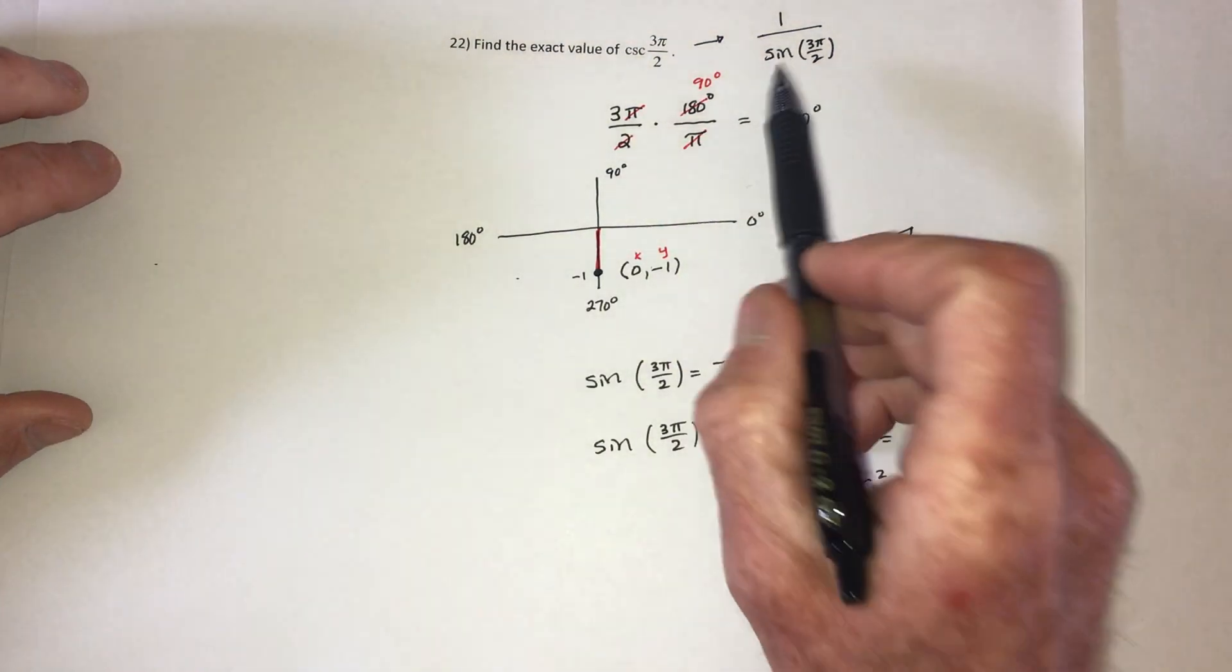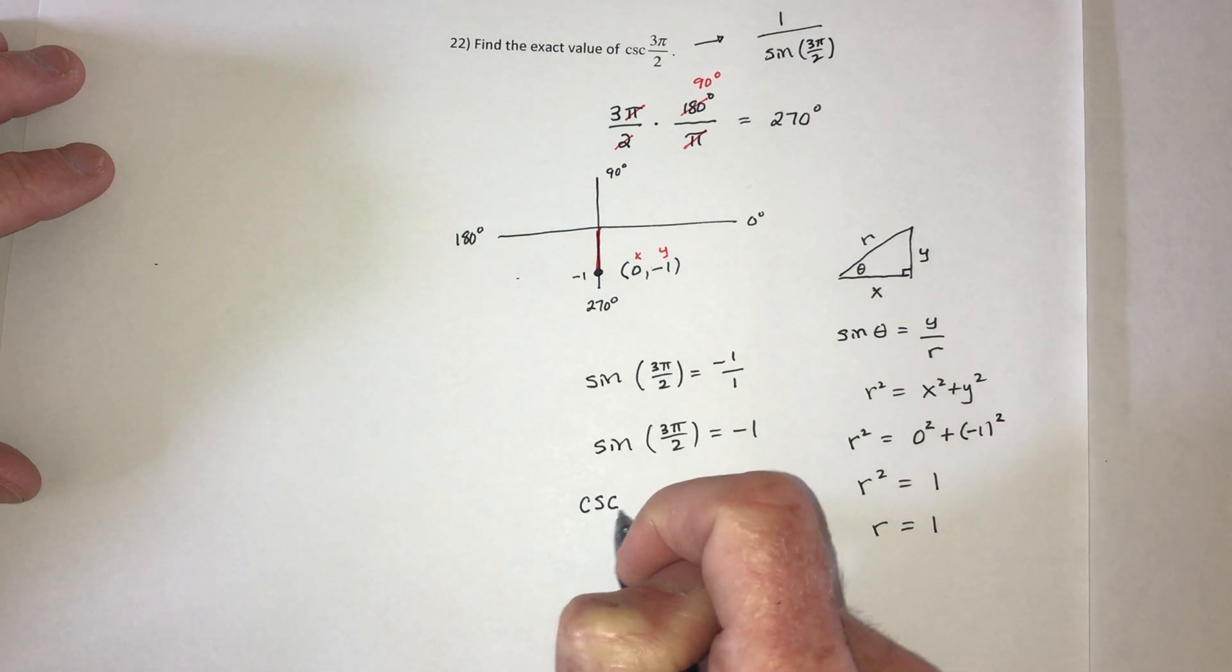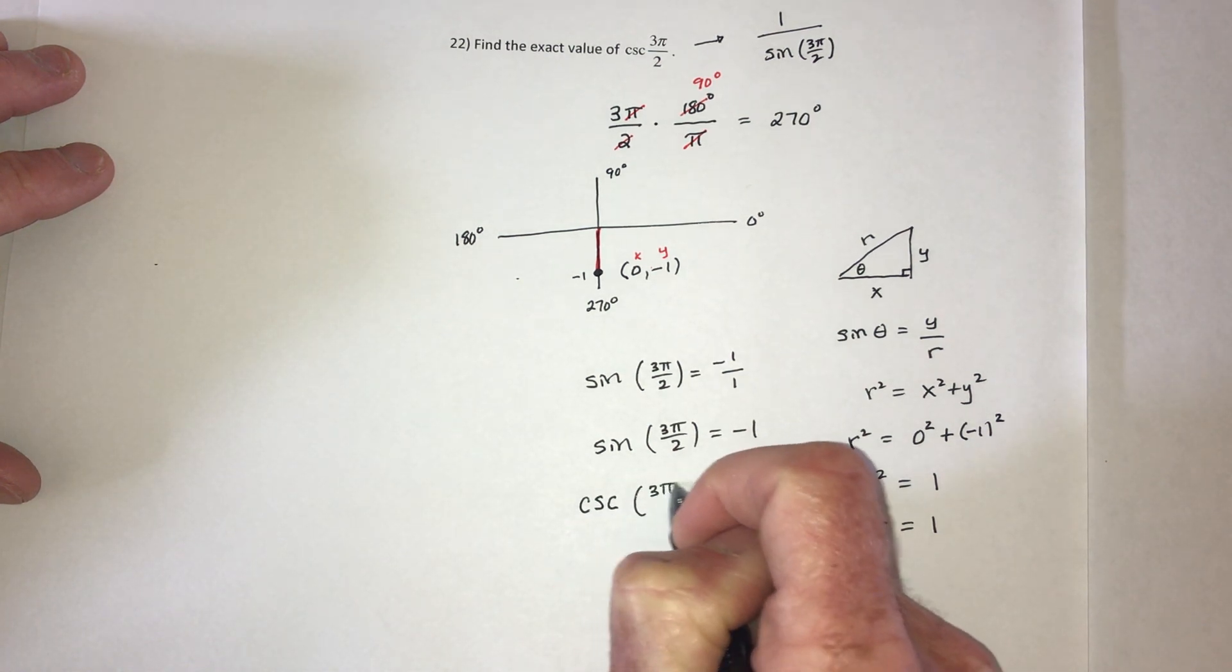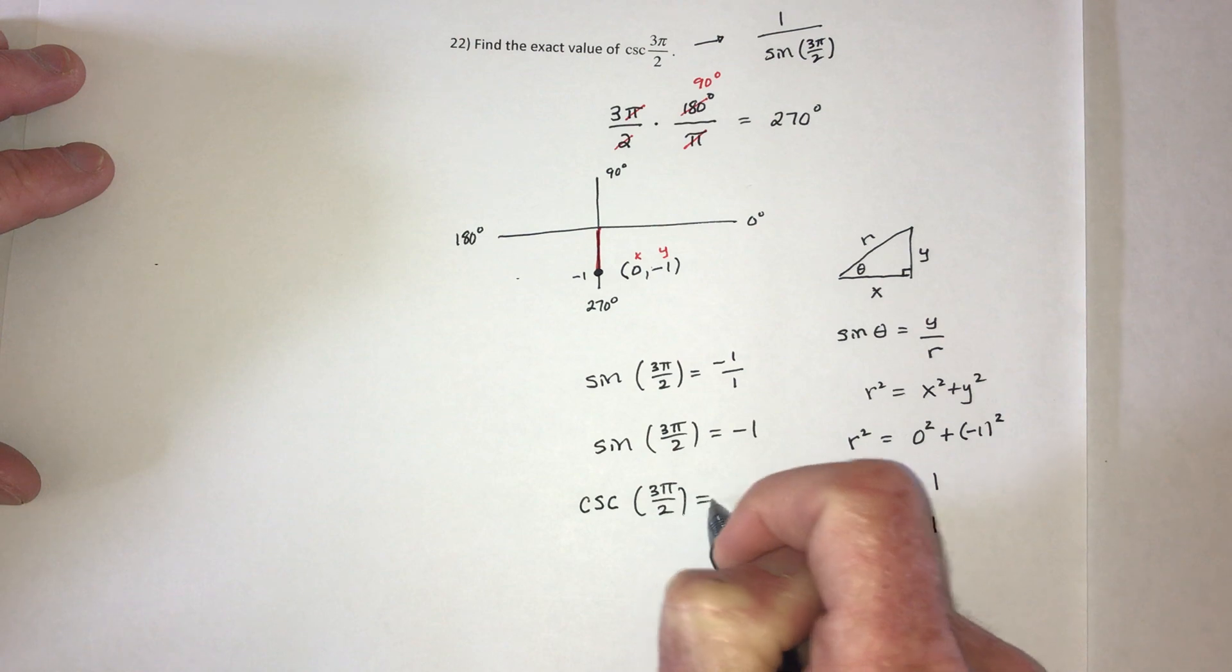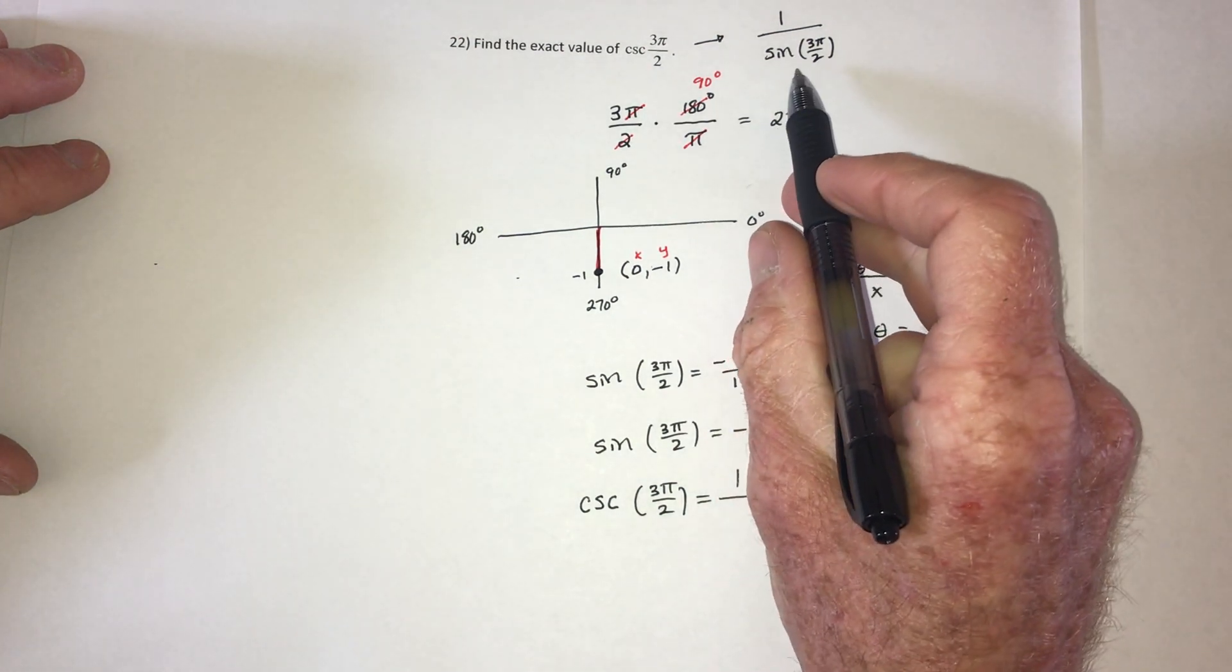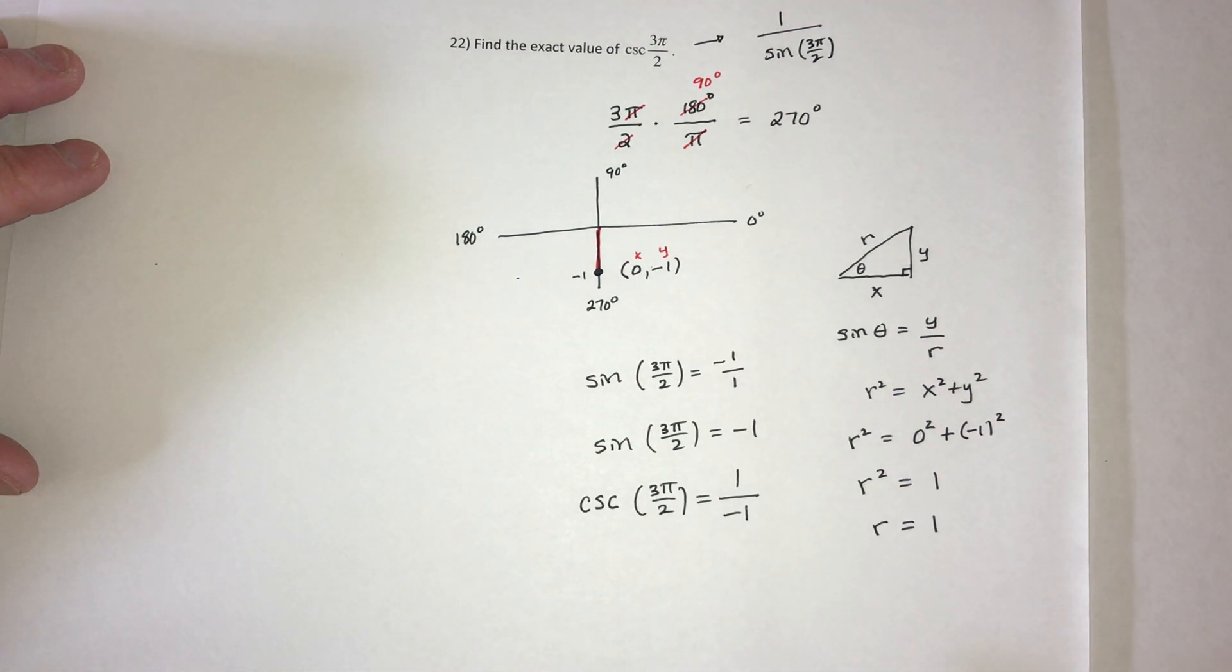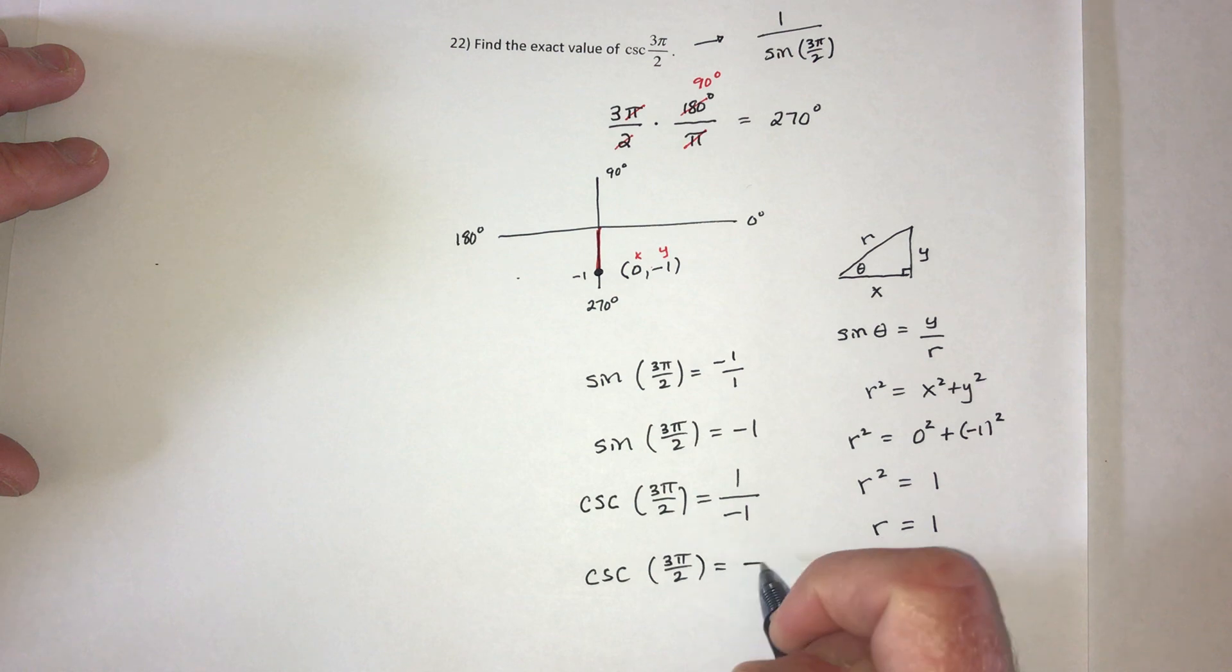Now to finish up the problem, just use this identity. So cosecant of 3π divided by 2 equals 1 over whatever your answer was for sine of 3π over 2. So it's going to be 1 divided by negative 1. So cosecant of 3π divided by 2 is equal to negative 1.